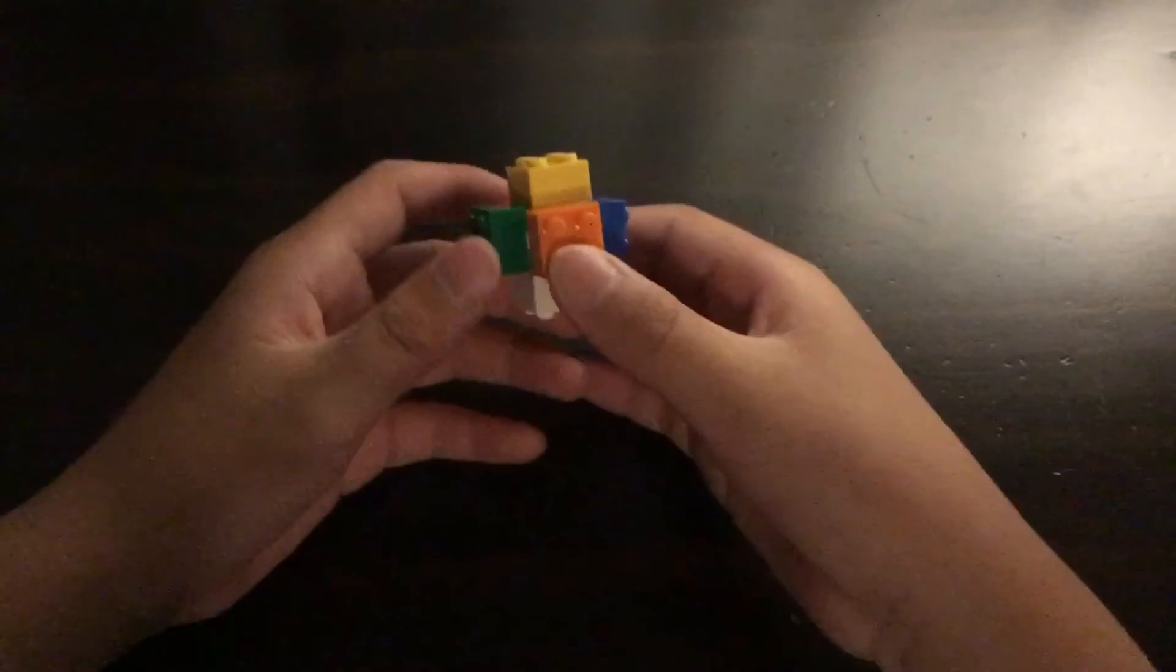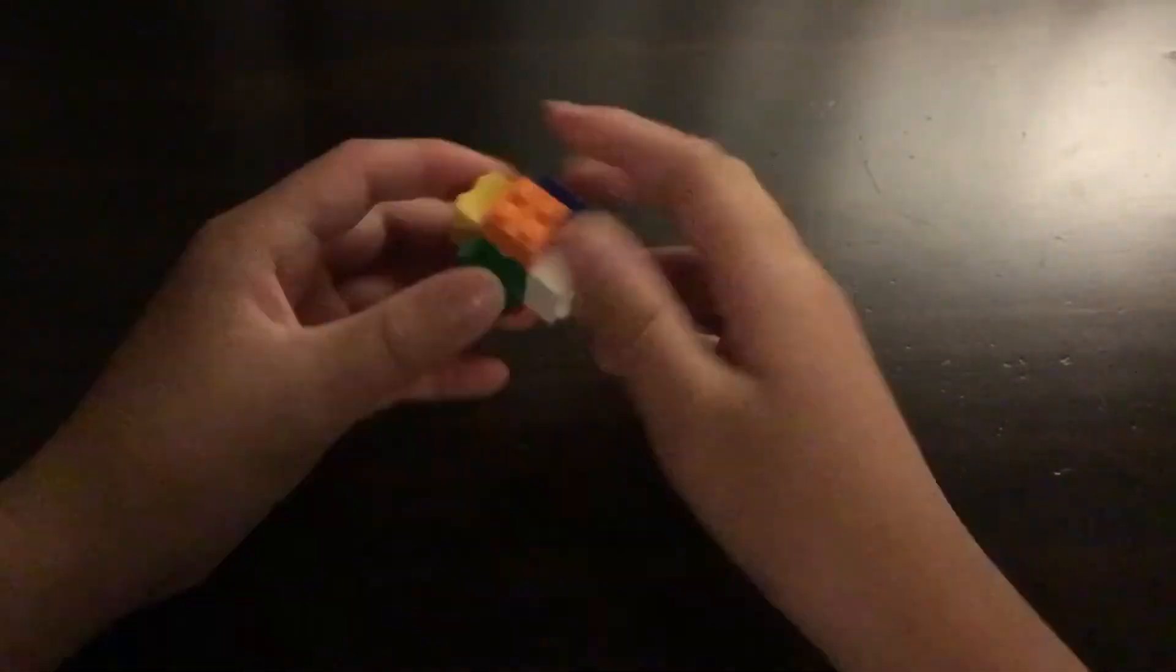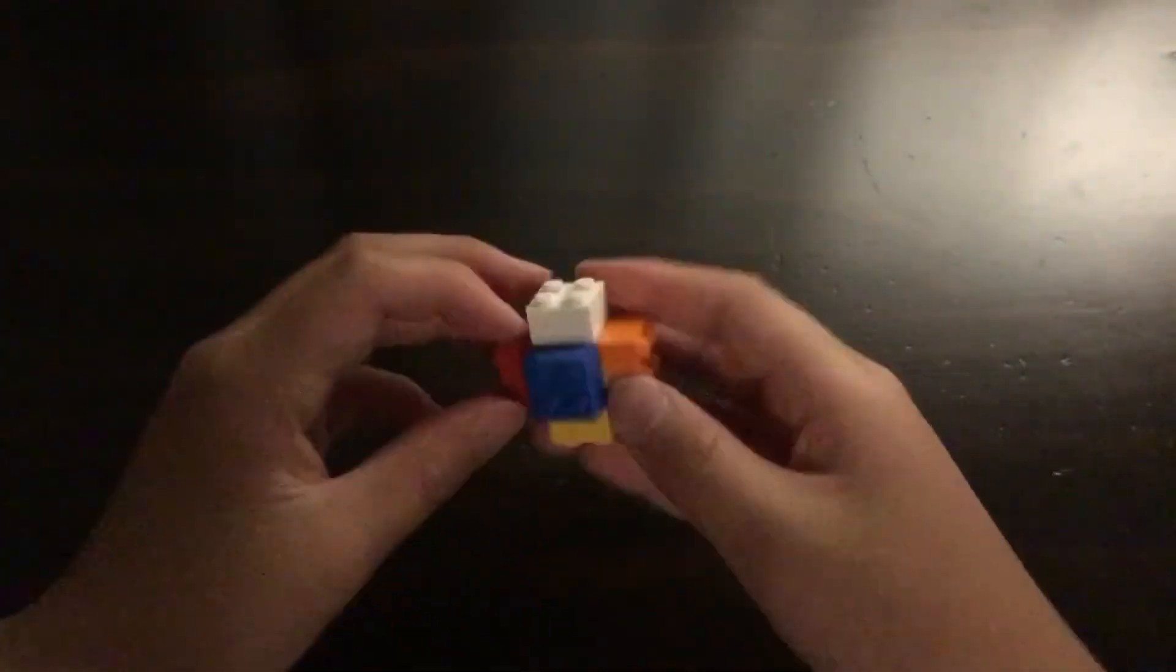Once you did it, you just need to maybe form the shape a little bit. Press each side like this. Then bam, you have a one by one Rubik's Cube.